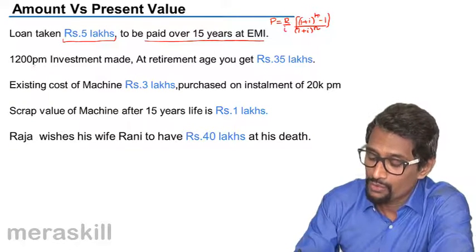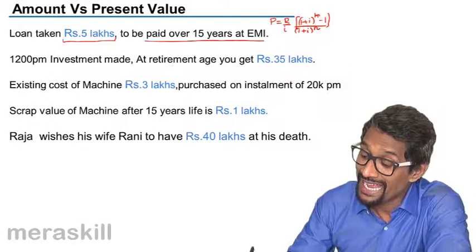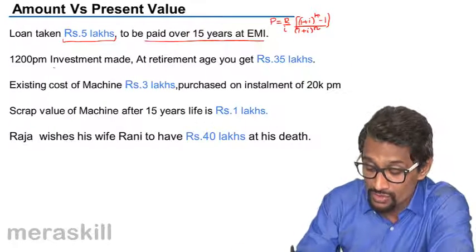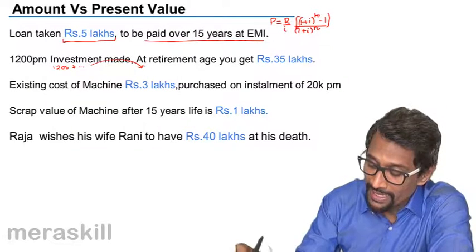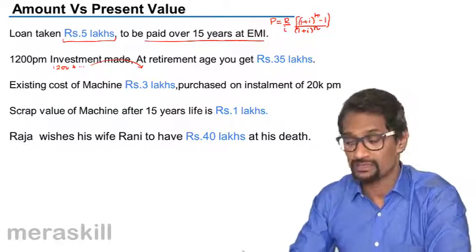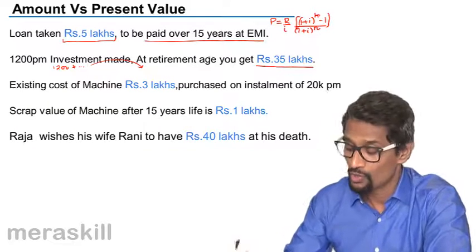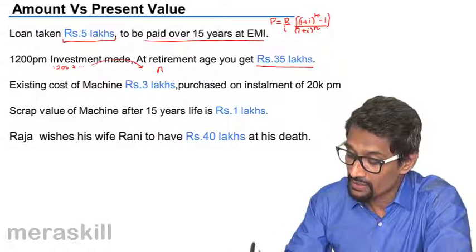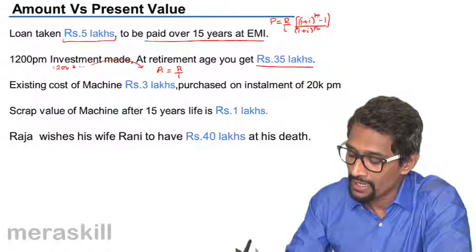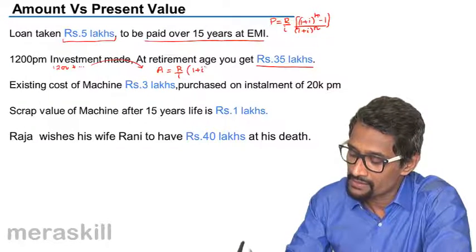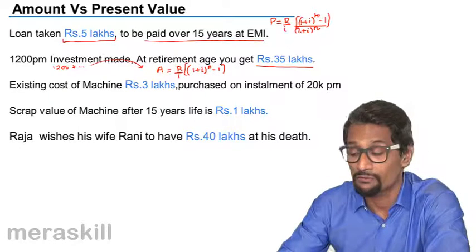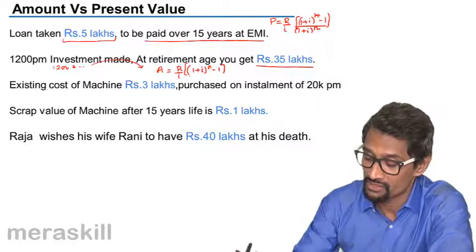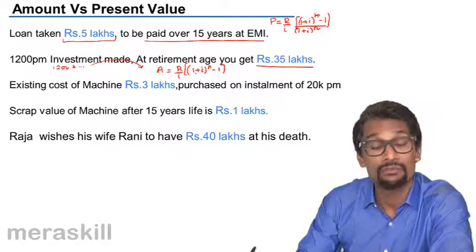Here, 1200 per month investment has been made towards retirement — today you start paying 1200 and what will be its value at retirement day. That means this is a case of future value. The formula is A equal to R upon I into (1 plus I raise to N minus 1). It is the same formula as P, except P has an additional factor of (1 plus I raise to N) in the denominator. Here we don't have that, so this will be the future value.